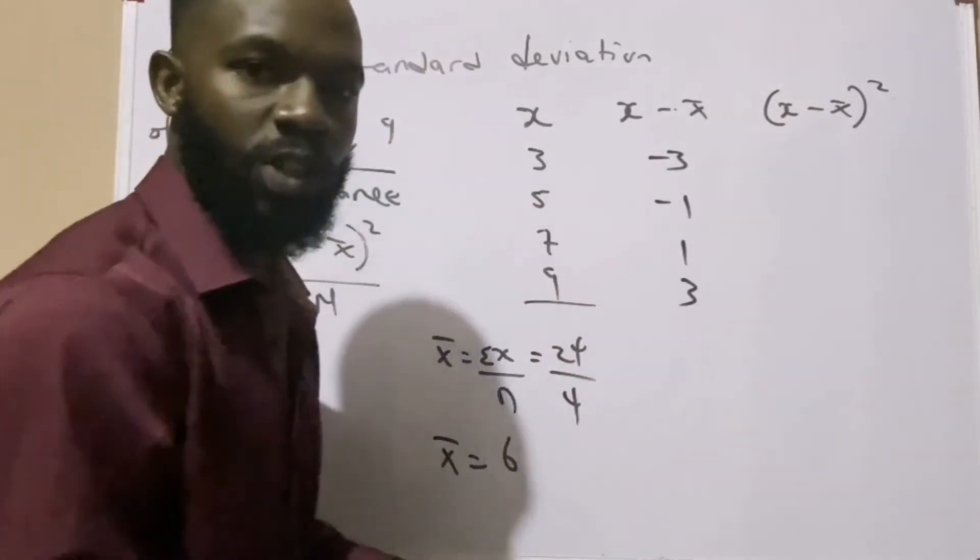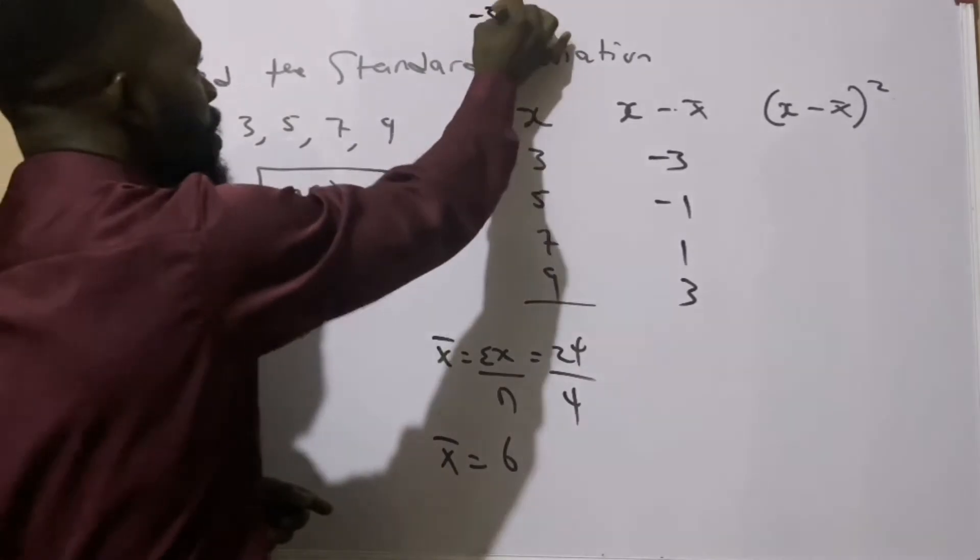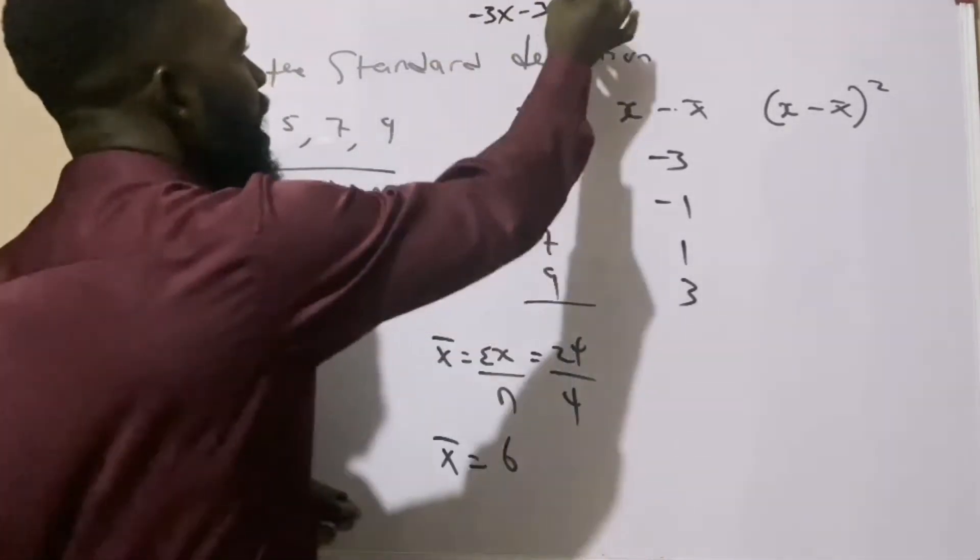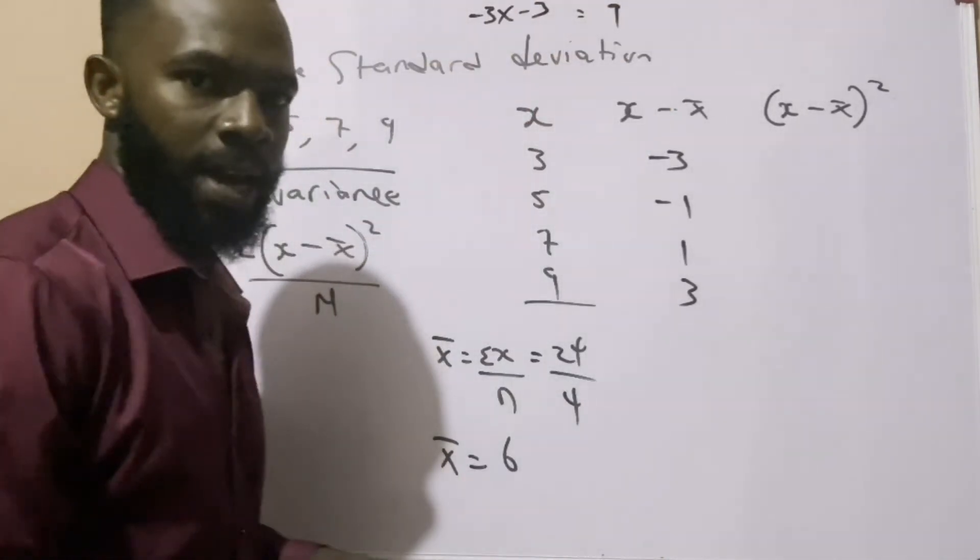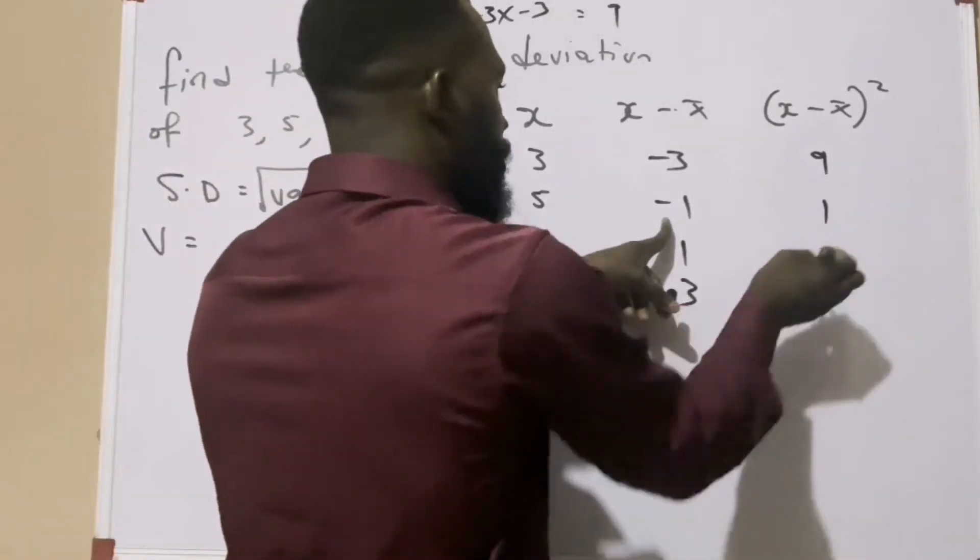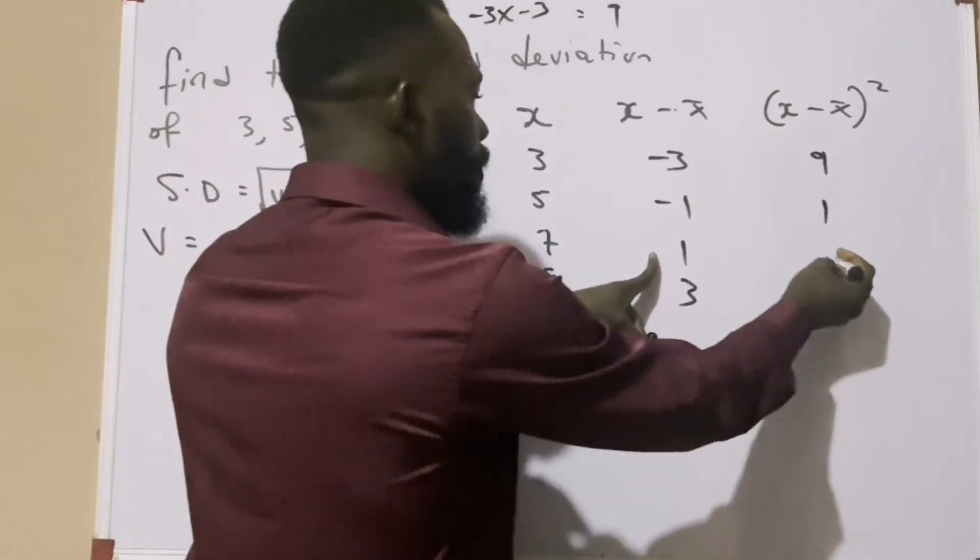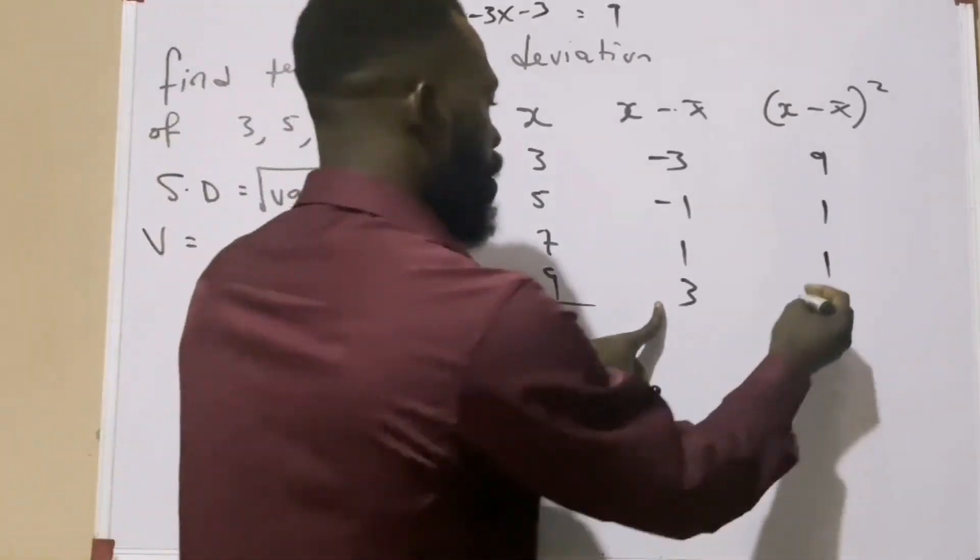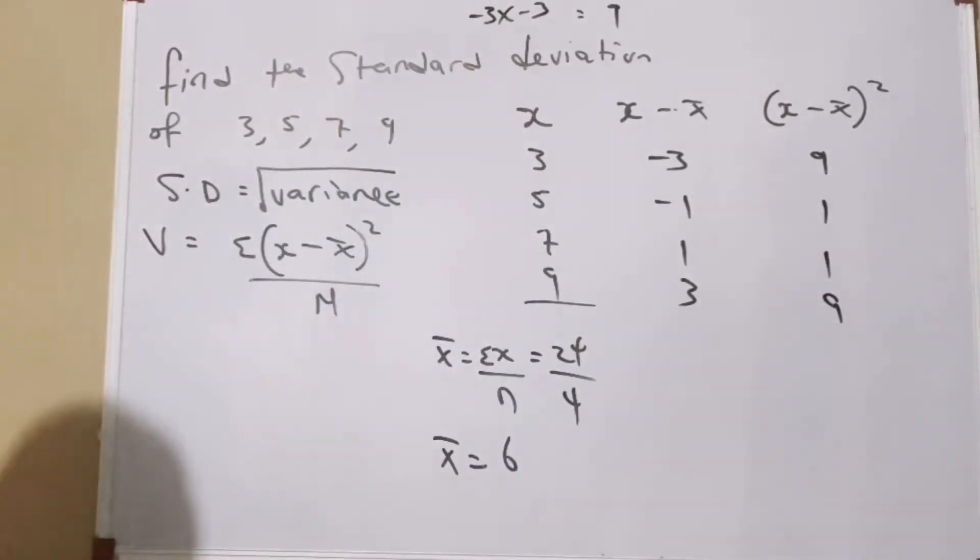So if I say minus 3 raised to the power of 2, it simply means minus 3 times minus 3, and that will give us a positive 9. Now negative 1 raised to the power of 2 will give us a positive 1. 1 raised to the power of 2 will give us a positive 1, and 3 raised to the power of 2 will give us also a positive 9.